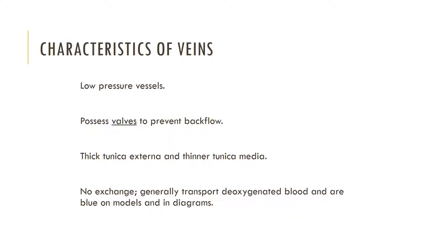The characteristics of veins: veins transport blood towards the heart and are generally labeled blue on models, transporting deoxygenated blood. Veins possess valves formed from folds of the tunica interna that function to prevent the backflow of blood. If a valve fails, blood will pool abnormally in the vessel causing it to become grossly distended; if near the surface, it is visible through the skin and is called a varicose vein. Varicose veins of the anal canal are called hemorrhoids. Veins also serve as blood reservoirs, with about 65 percent of the total blood volume in our systemic veins at any given time.